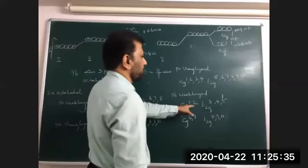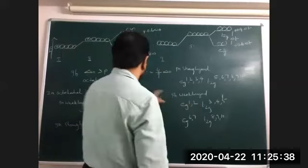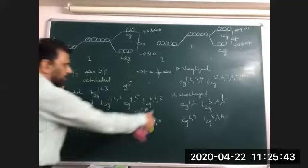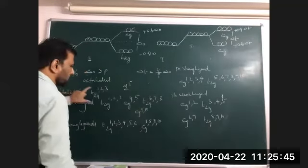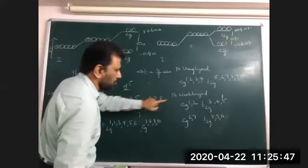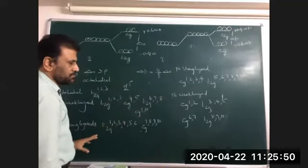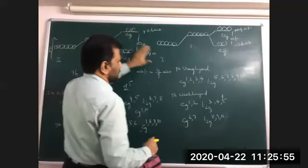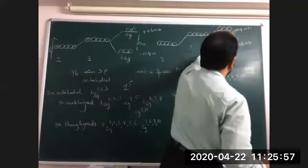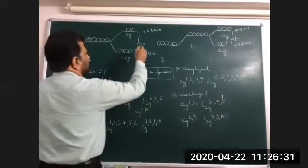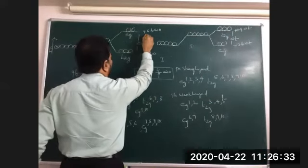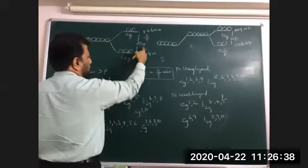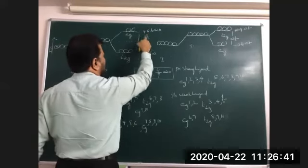For the d5 system, Crystal Field Stabilization Energy is zero — in weak ligands, CFSE for d5 is zero. For a d10 system, CFSE is also zero because all levels are fully filled: 6 electrons in t2g and 4 in eg cancel out. In textbooks it is given as 3/5 delta (= 0.6) and 2/5 delta (= 0.4).